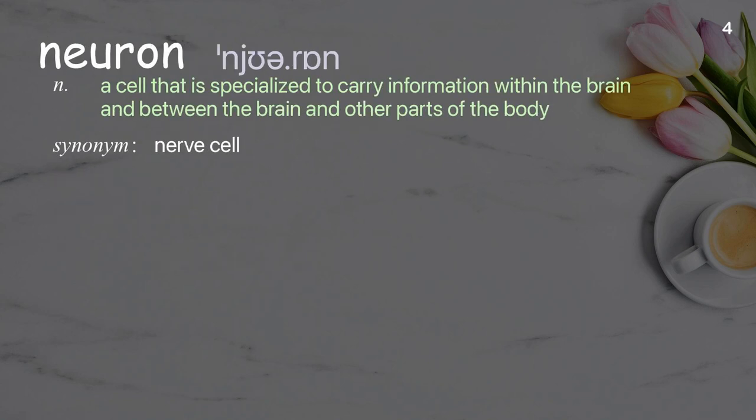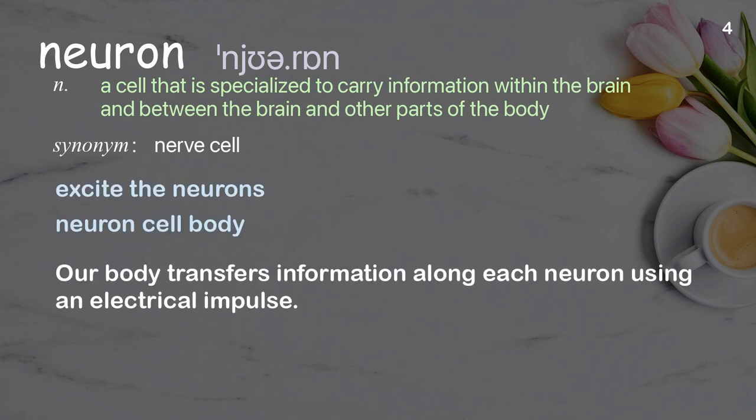Neuron: a cell that is specialized to carry information within the brain and between the brain and other parts of the body. Examples: excite the neurons, neuron cell body. Our body transfers information along each neuron using an electrical impulse.